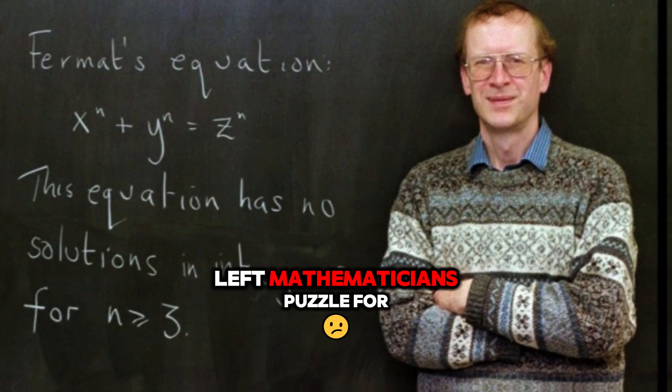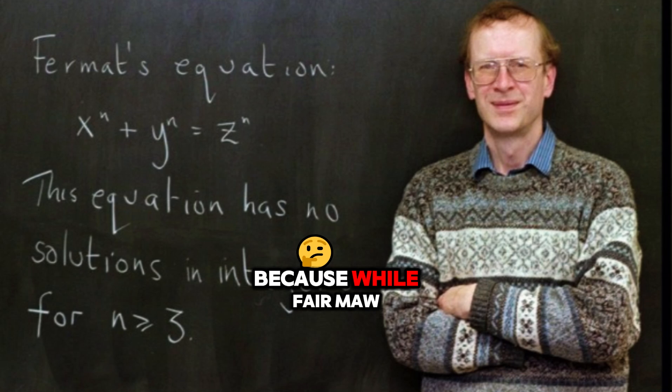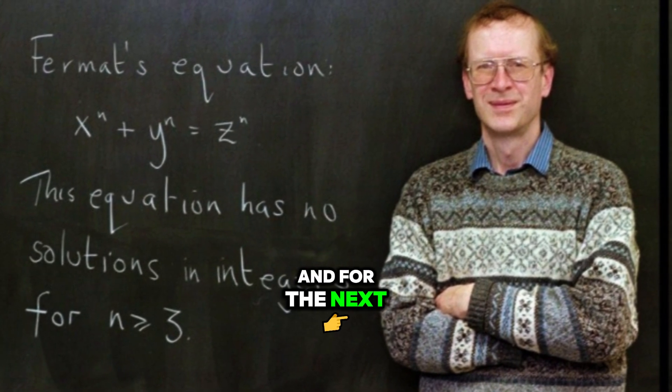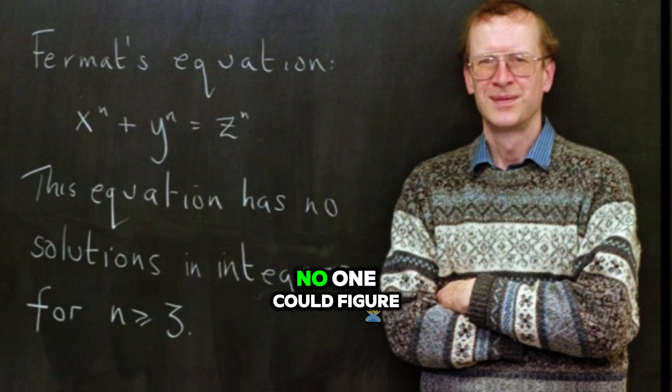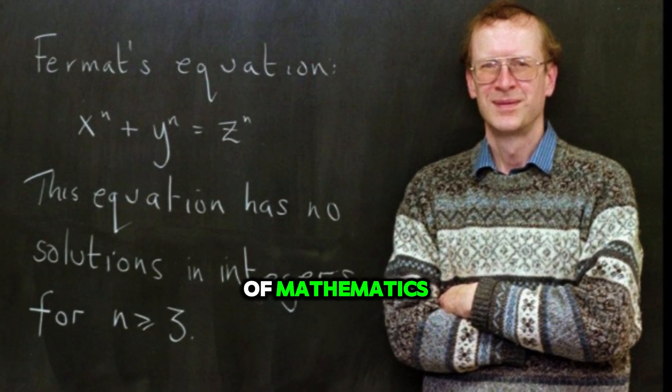Fermat's note left mathematicians puzzled for centuries. Why? Because while Fermat claimed to have a proof, he never shared it. And for the next 358 years, no one could figure it out. It became one of the greatest mysteries in the history of mathematics.